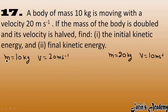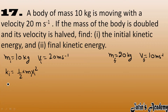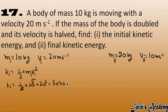Now we calculate the initial kinetic energy. Initial kinetic energy equals half m v squared. So initial kinetic energy is half, mass is 10, velocity is 20 squared. That gives us 5 into 400, which equals 2000 joule.